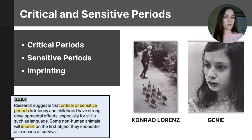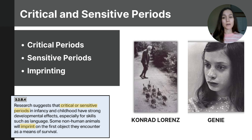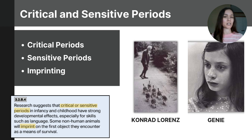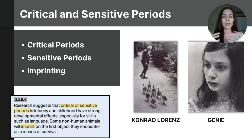To define these concepts clearly: a critical period is a sensitive time in development when the brain is specifically ready to learn a skill, and if the right experience doesn't happen during that time, the skill may never fully develop. A sensitive period is a time when learning a skill is easiest, but it's still possible — just more difficult — to learn it later. Imprinting is a form of learning where certain animals like ducks or geese form a strong attachment to the first moving object they see after hatching, usually their mother. Knowing about these developmental windows gives us insight into how people grow, learn, and develop language.